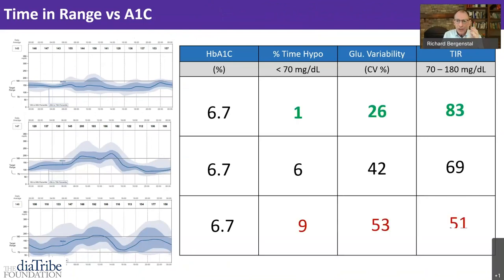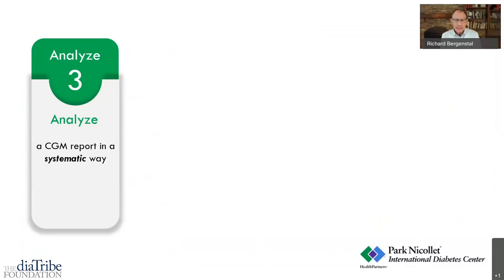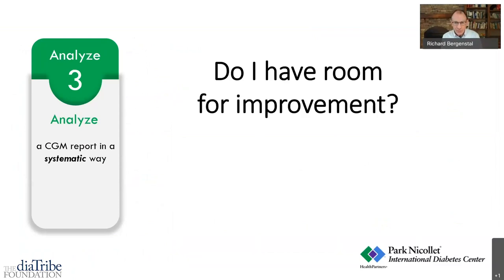And there they are again, displayed in table form: 6.7, 6.7, 6.7 — but very different hypoglycemia, variability, and time in range. We believe that the CGM and all those elements are much more meaningful to you than just an average over 90 days. That's how you organize the data and why we think it's important. Now, how do you analyze it in a straightforward, systematic way?